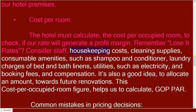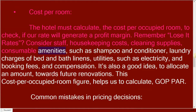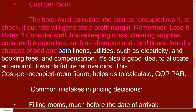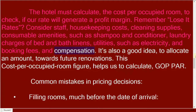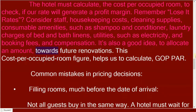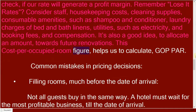Consider staff, housekeeping costs, cleaning supplies, consumable amenities such as shampoo and conditioner, laundry charges for bed and bath linens, utilities such as electricity, booking fees, and compensation. It's also a good idea to allocate an amount towards future renovations. This cost per occupied room figure helps us to calculate GOP PAR.